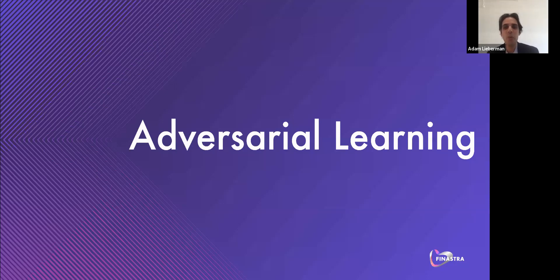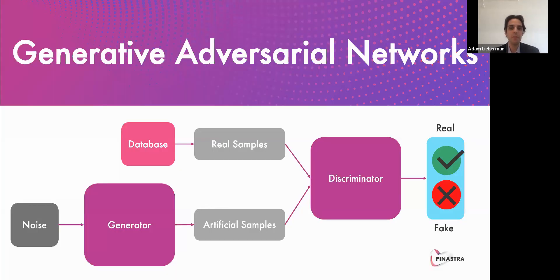Let's now briefly discuss adversarial learning, a way to help improve the fairness of your classifier. Before we get into adversarial learning, we need to talk about GANs, which are generative adversarial networks. The idea behind a GAN is simple — we have two neural networks, the generator and the discriminator, who are playing a game against one another. The generator learns to generate plausible fake data that looks real, and the generated instances become negative training examples for the discriminator. The discriminator learns to distinguish the generator's fake data from real data, and penalizes the generator for producing implausible results. When training begins, the generator produces obviously fake data, and the discriminator quickly learns to tell it's fake. As training progresses, the generator gets closer to producing output that can fool the discriminator, until the discriminator gets worse at telling the difference and starts to classify the fake data as real.